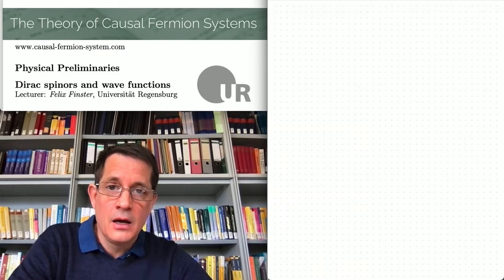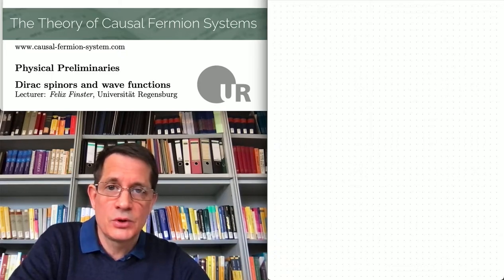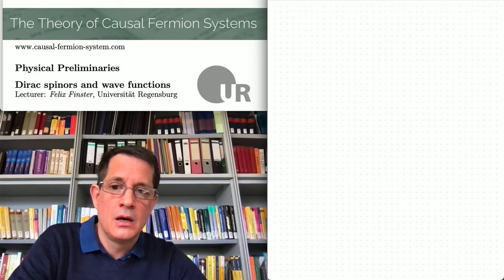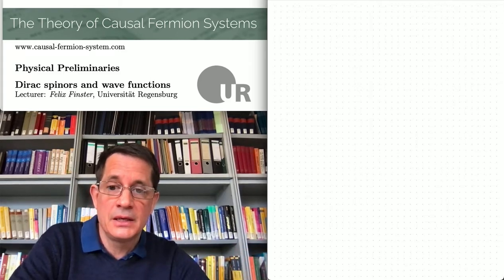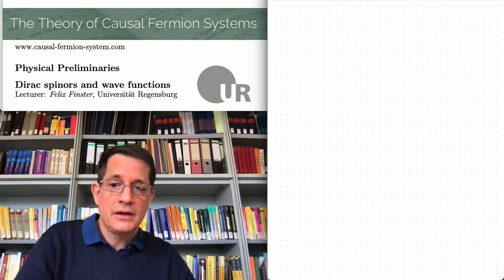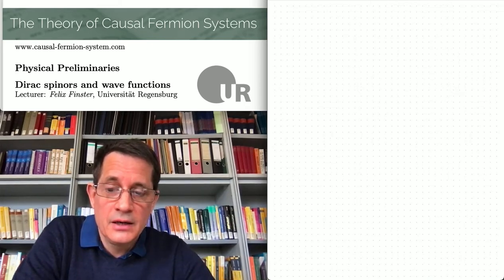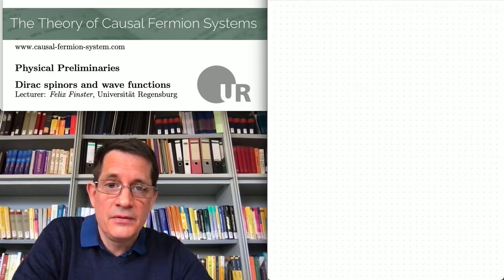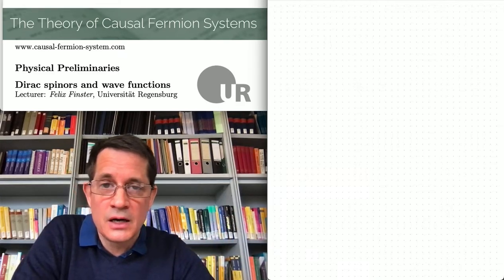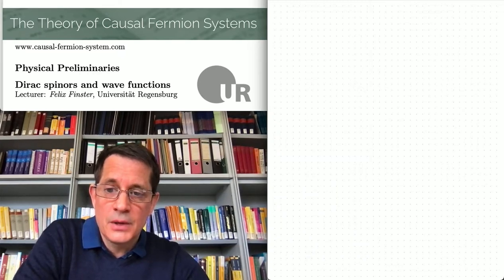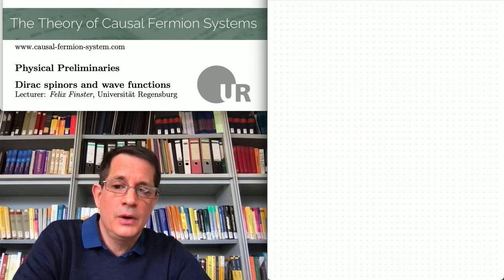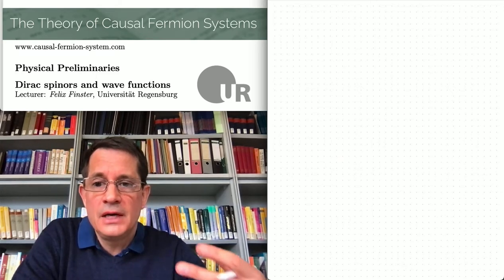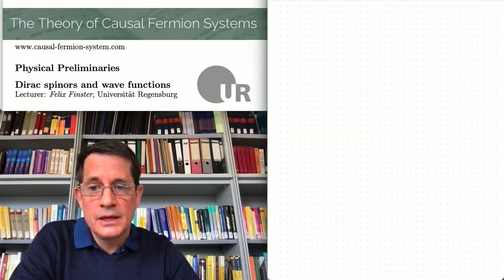Hello everybody, welcome back. In the previous video I introduced the Dirac equation in a similar style as what you find in many physics textbooks. Of course I left out a lot of material — I didn't really tell you what the physics of the spin is about. There is no point in doing so here because you find it nicely in many physics textbooks and there are a few suggestions on our website. Here I want to proceed by explaining a few mathematical structures underlying the Dirac equation. I also want to introduce a convenient notation which we will use later on.